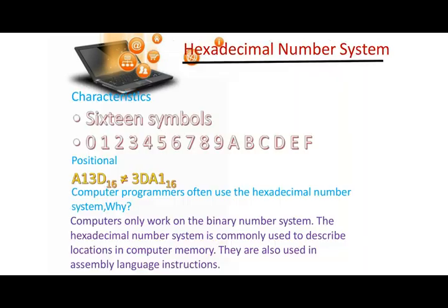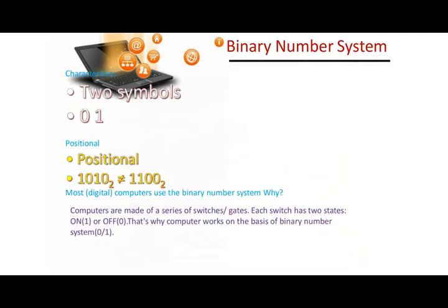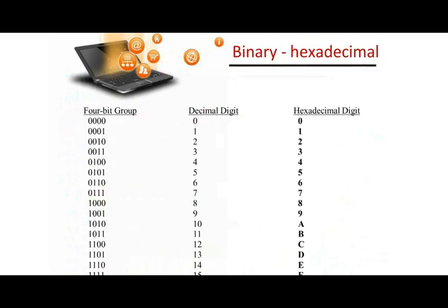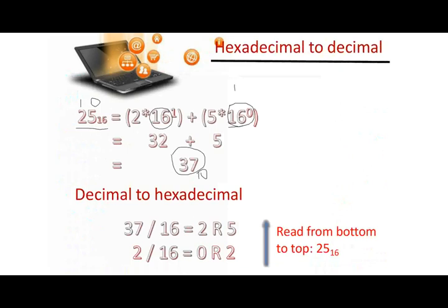The octal slide was missing but the procedure is the same. For example, if the number is 25 with base 8, then: 5×8⁰ = 5×1 = 5, and 2×8¹ = 2×8 = 16. Adding: 5+16 = 21. So the decimal result when converting 258 to decimal is 21. The same procedure applies for any octal to decimal conversion.